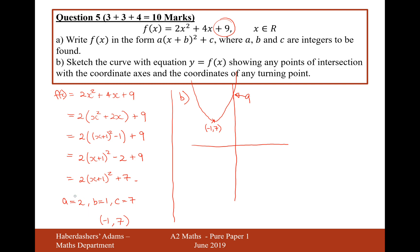And the 2 doesn't really get involved in the minimum points, but it is going to make the graph more steep than it would if the 2 wasn't there. Okay, so there we are. That's the answer for these two parts here.